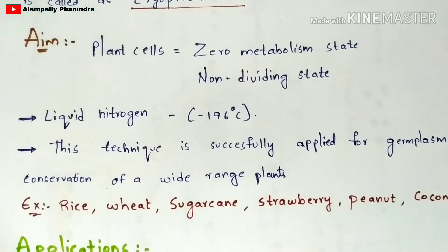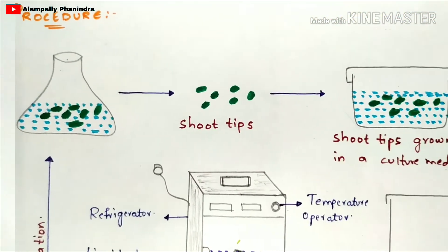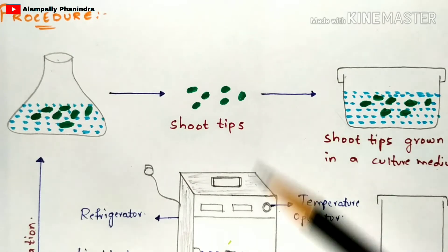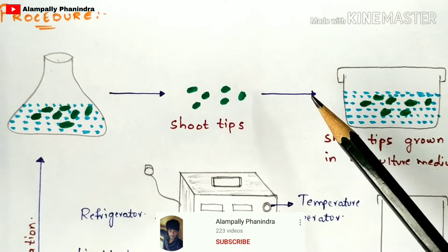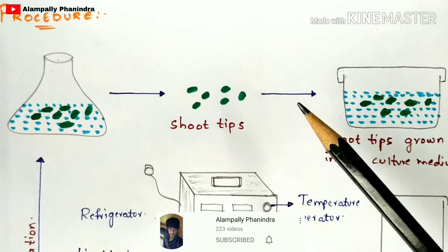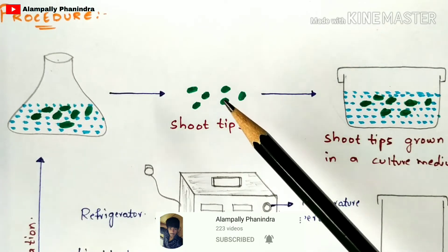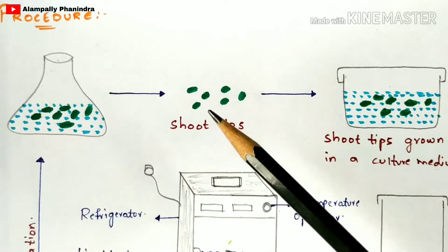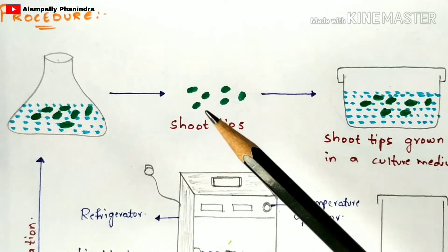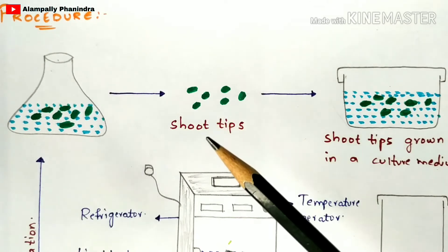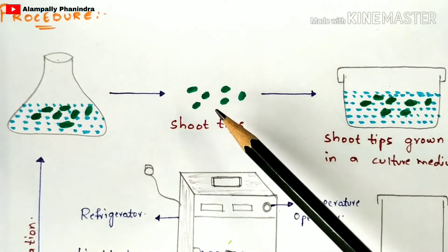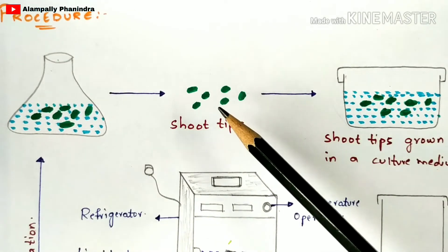What is the first step in this cryopreservation technique? Selection of a biological material which you want to preserve. Here, since we are discussing plant biotechnology, I have mentioned shoot tips. If you are performing animal biotechnology, then you can take sperms, bone marrow, or any type of organs you want to preserve.